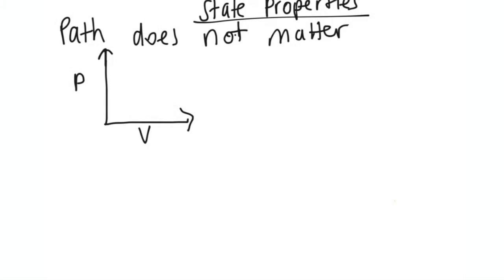Alright, state properties. So I promise you, I'd finish off my video with state properties. So a state property is something, is a property, like temperature, pressure, where the path does not matter. So I'm going to give you a counterexample of that, which is what I told you guys at the beginning of my video. So I said before, heat and work are not state properties. So that means the path does matter. Path matters.